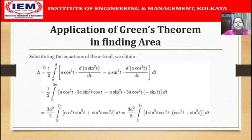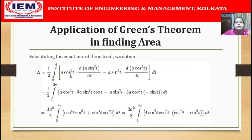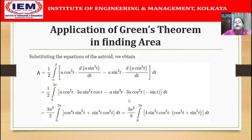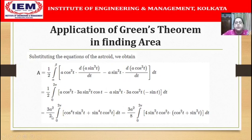We substitute the equations of the asteroid: x equals a cos³t and y equals a sin³t. We get a cos³t, and differentiating y gives 3a sin²t cos t, while differentiating x gives minus 3a cos²t sin t. As we simplify this equation, 3a² comes out, giving 3a²/2 times (cos⁴t sin²t plus sin⁴t cos²t).